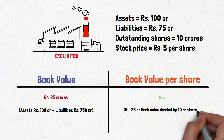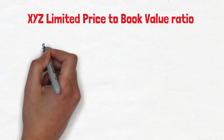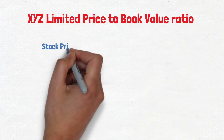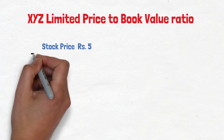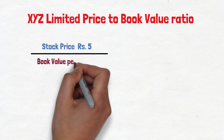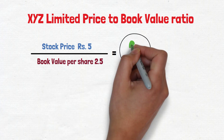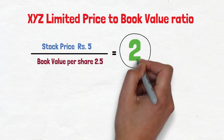Now we can calculate the price-to-book value ratio. We will divide the stock price of rupee 5 by the book value per share of rupee 2.5. This will give us a price-to-book value ratio of 2. In other words, the stock of XYZ Limited is trading at 2 times its book value.